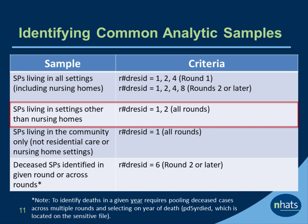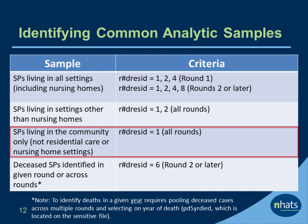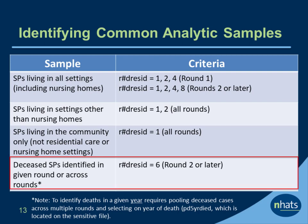Let's take a look at the next example. A sample of SPs living in settings other than nursing homes has a RESID equal to 1 or 2 in all rounds. Finally, a sample of deceased SPs identified in a given round has a RESID equal to 6.